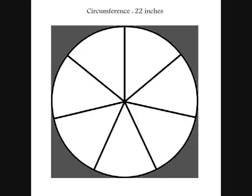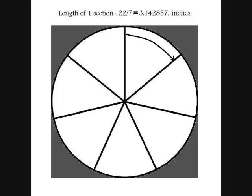If the circumference is 22 inches, it follows logically that if the circle is divided into seven parts, seven equal parts, each part is 22 divided by 7, or what you see on the screen, 3.142857 inches.